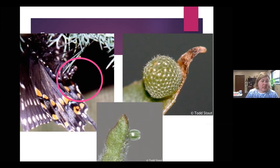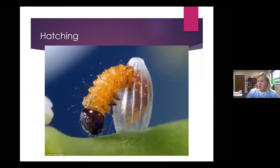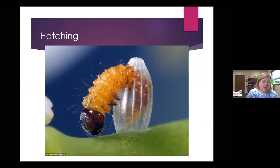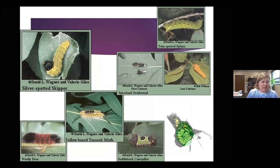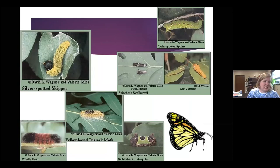Just a few days after they are laid, they start to hatch. This is a baby caterpillar — very teeny tiny. Some of them are less than a quarter of an inch long when they hatch out. Basically, a caterpillar is a head, a mouth, and a stomach. So what they do is eat, and feed, and grow.